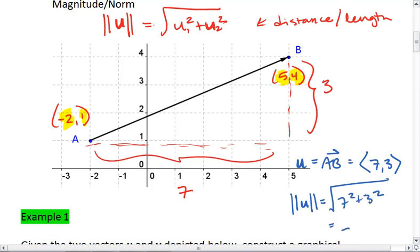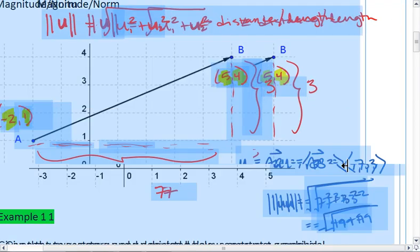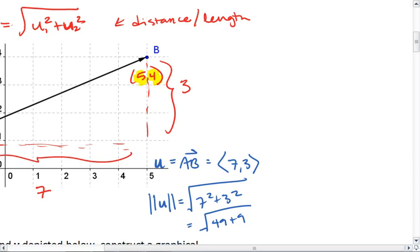Which equals the square root of 49 plus 9. Let's add a little bit more space here. So we get the square root of 49 plus 9.